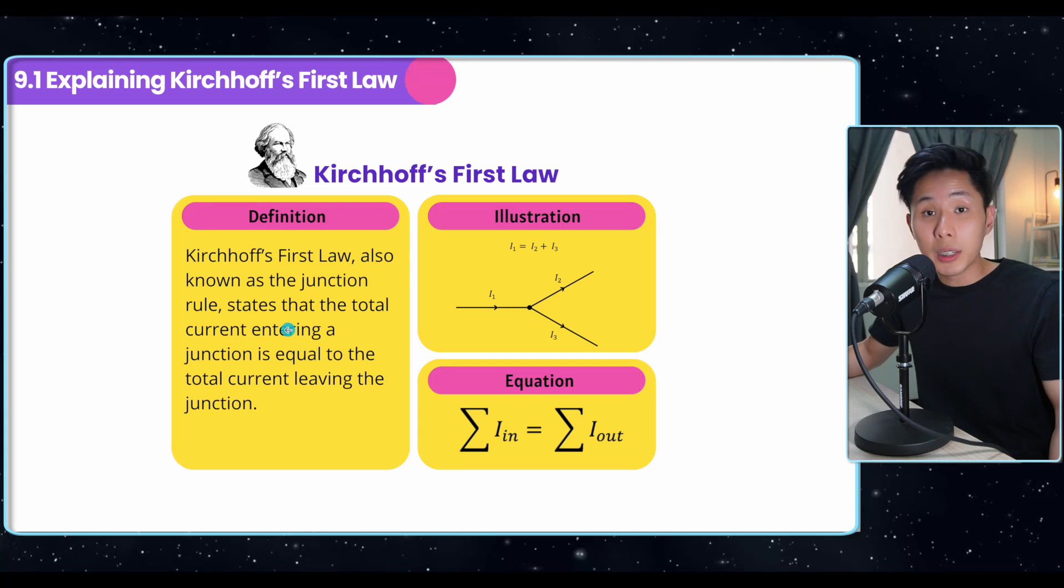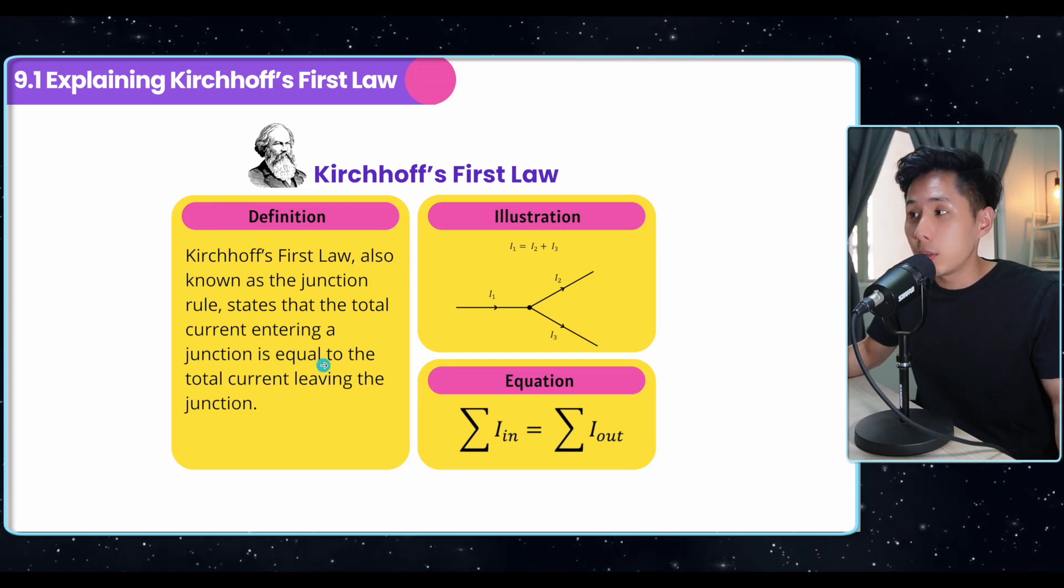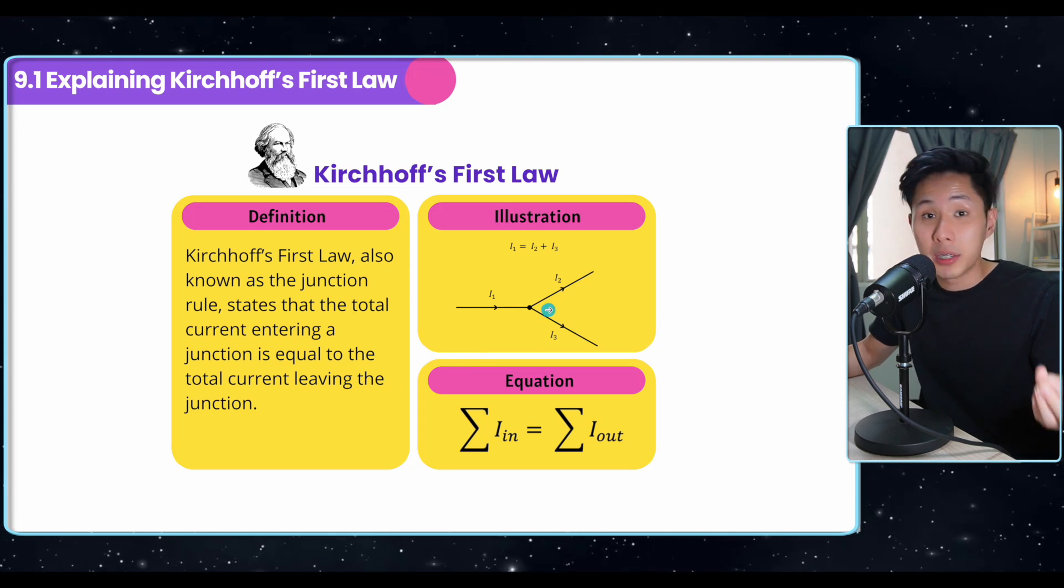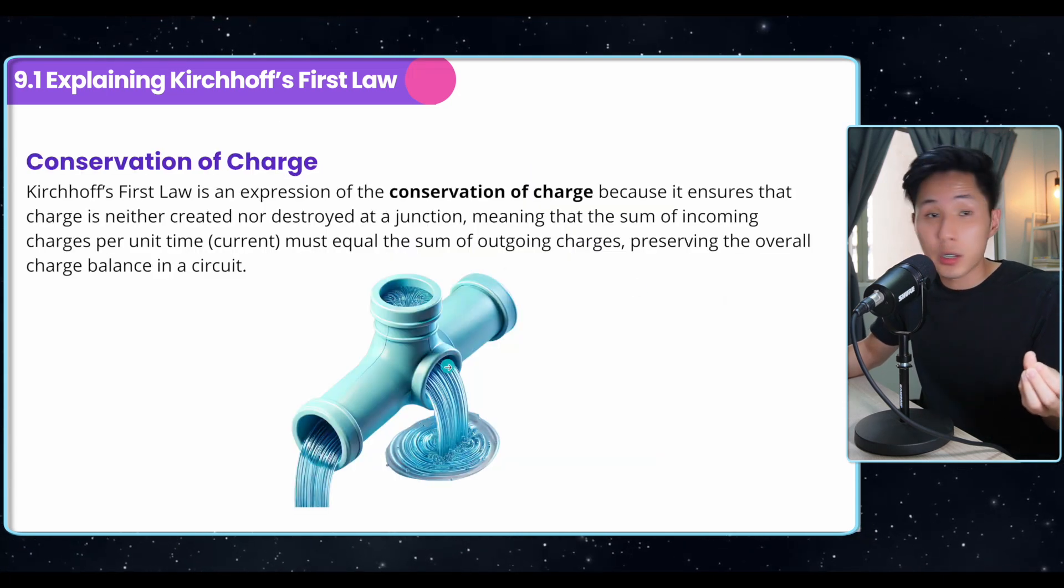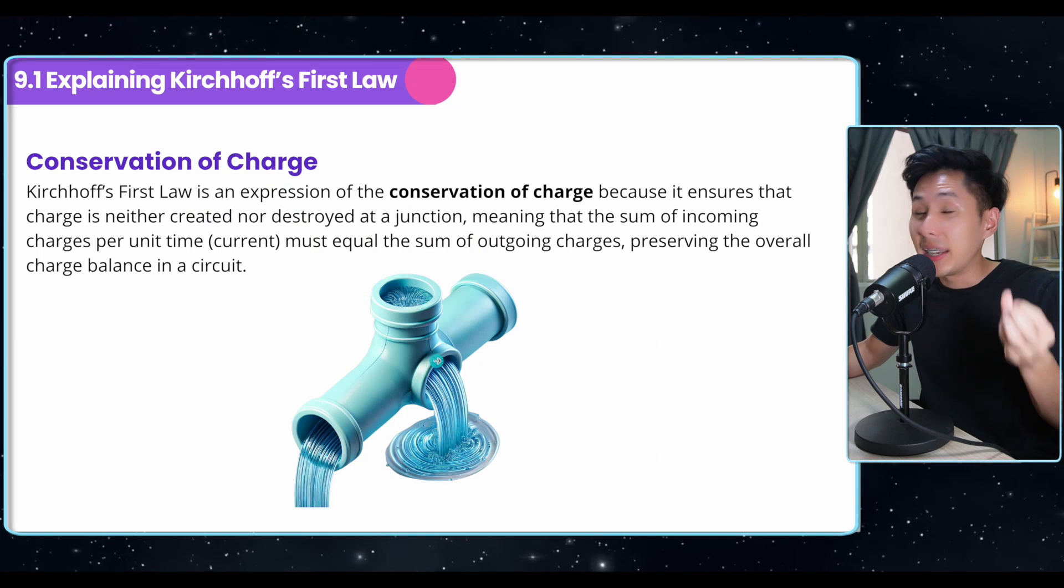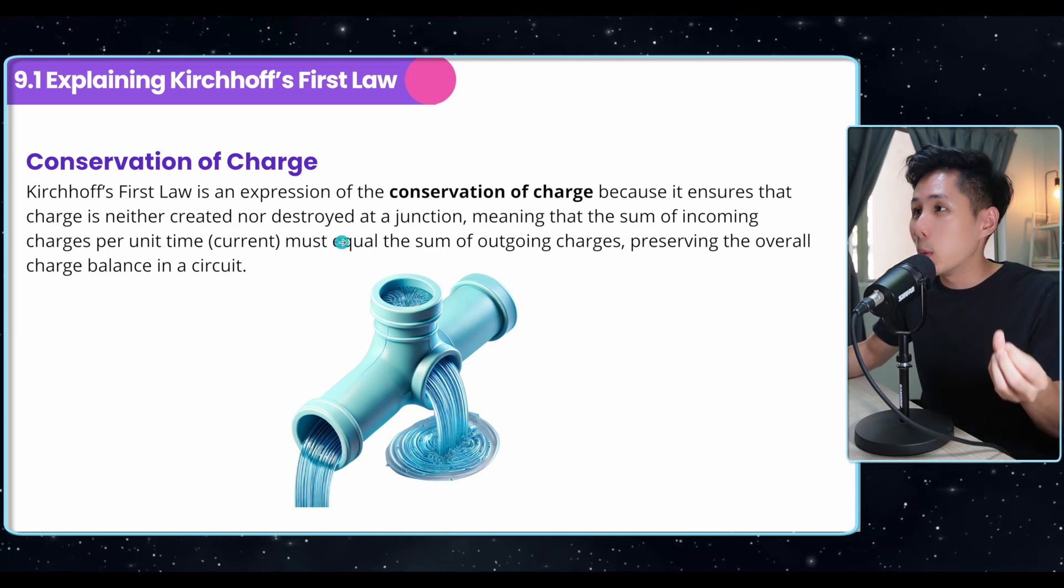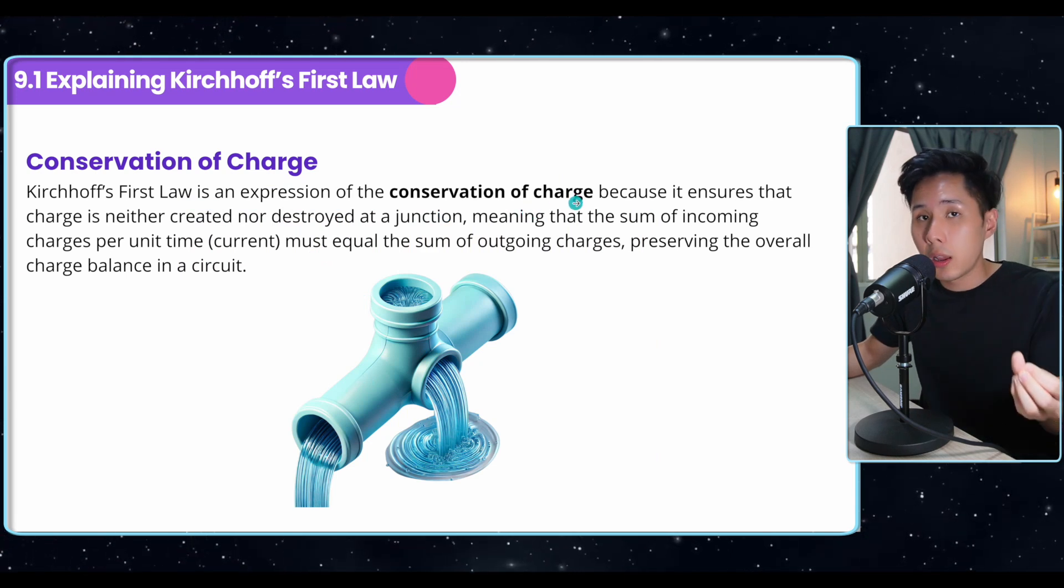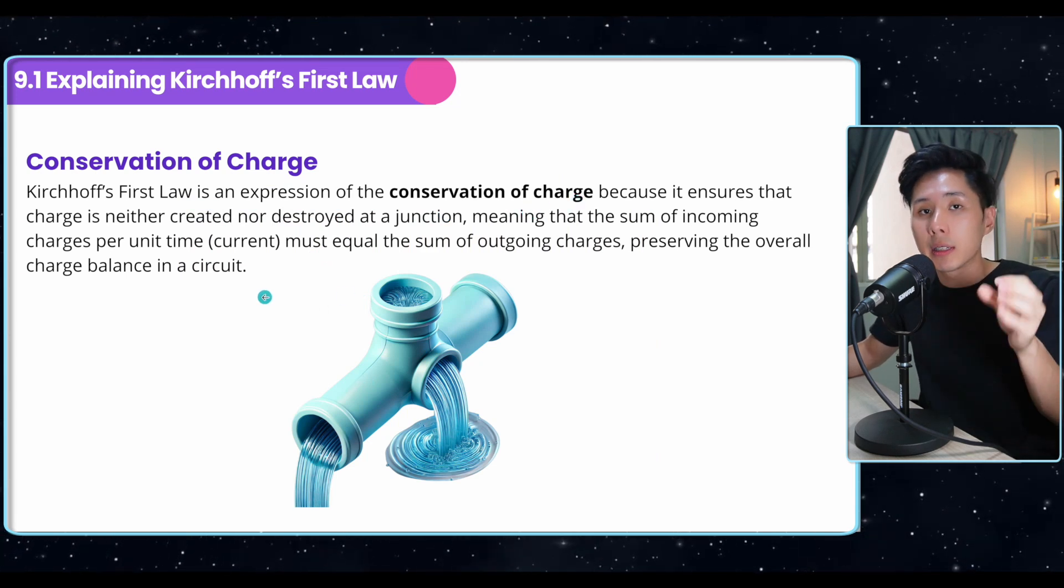The law states that the total current entering a junction is equal to the total current leaving the junction, which I put up a diagram here to illustrate that, which is also what I show you in the beginning of the video. It is the same concept. So this law is an expression of the conservation of charge. We know that current means the flow of charge.